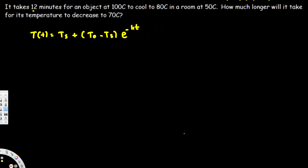Small t is time and k is a constant. Looking at the initial information, we have time = 12 minutes, the object's initial temperature T0 = 100 degrees Celsius, the temperature at that time T(t) = 80 degrees Celsius, and the surrounding temperature Ts = 50 degrees Celsius. We have all values except k, so we need to find k first.